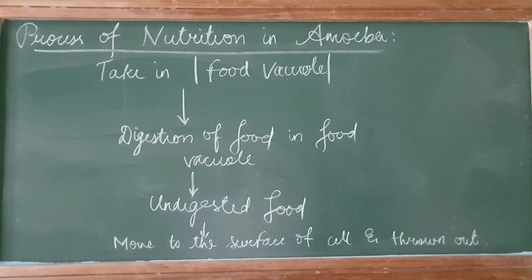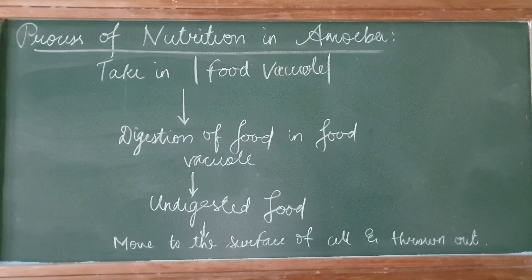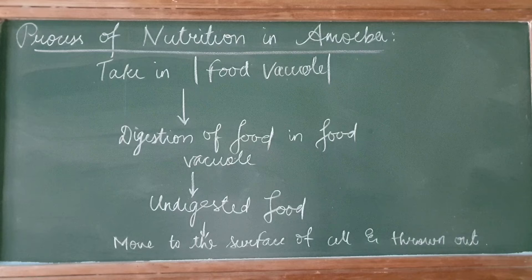As we have seen, food is taken into the food vacuole. Now the digestion of food is happening in the food vacuole. Here the complex substances get diffused into smaller substances into the cytoplasm.